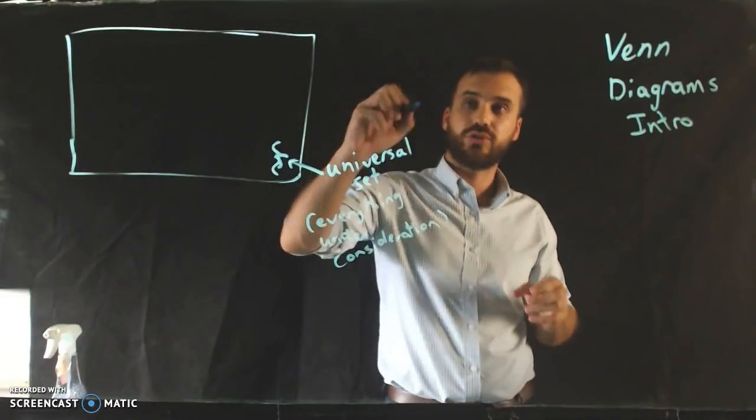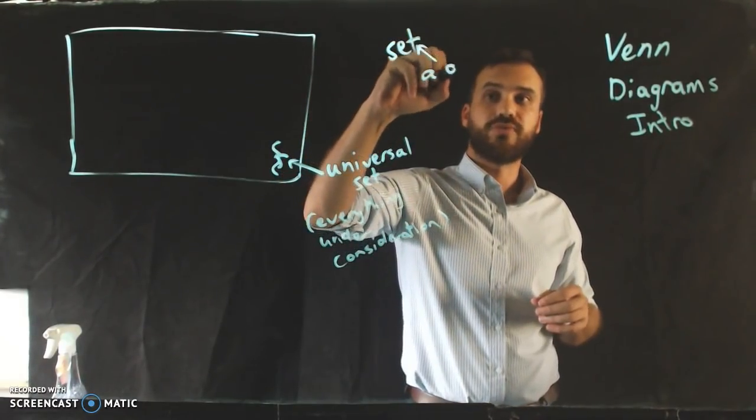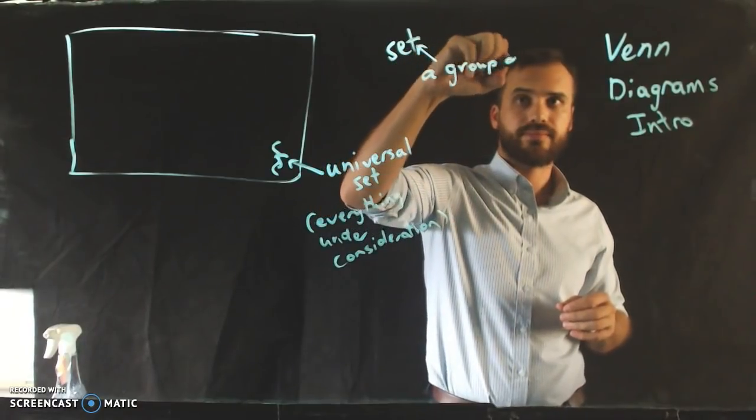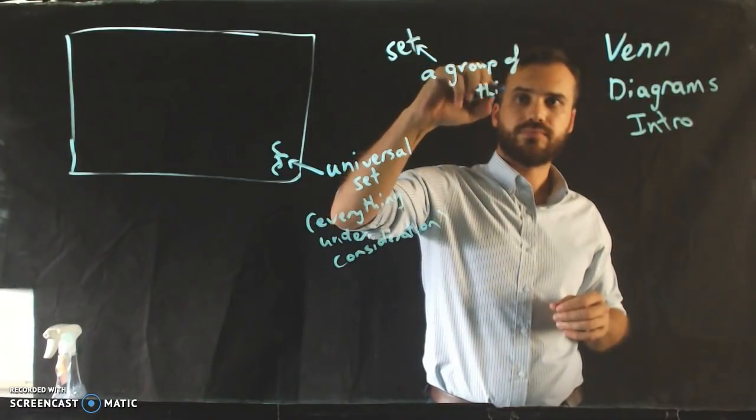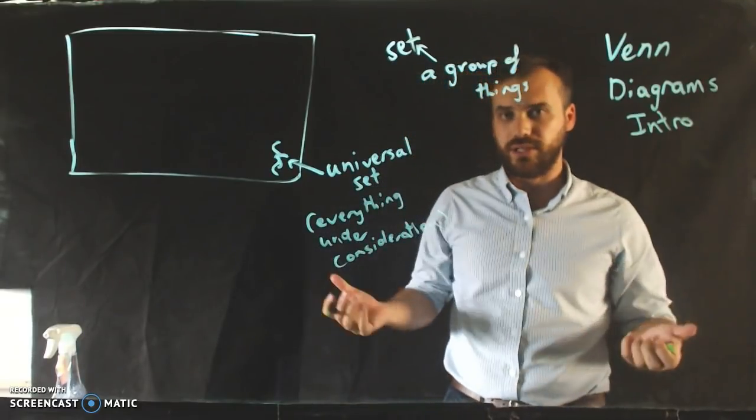A set, should talk really about sets. A set is just a group of things. Now, the classic Venn diagram looks something like this.